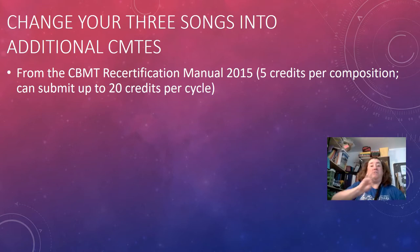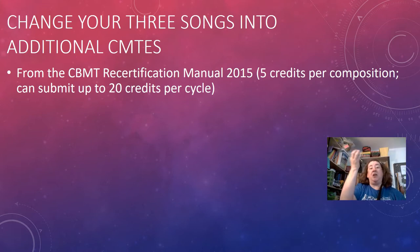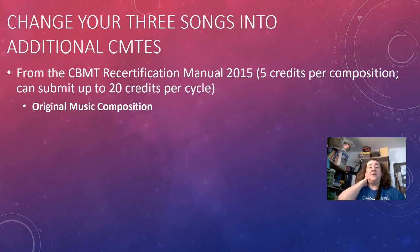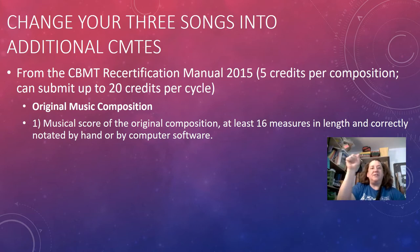We've come to the end — you should have three new songs that you have composed. According to the CBMT Recertification Manual published in 2015, you can get up to five credits per composition and submit up to 20 credits per cycle — so four songs per five-year cycle. To change your songs into CMTEs, it must be an original music composition you wrote yourself. You need a musical score printed out, at least 16 measures in length, correctly notated by hand or computer software.